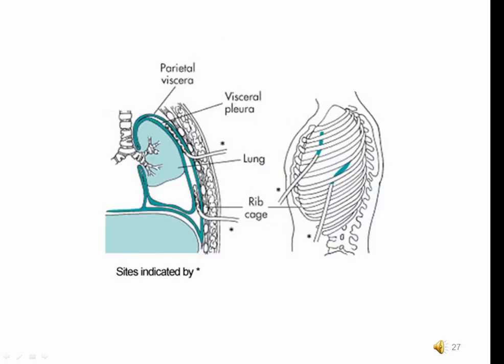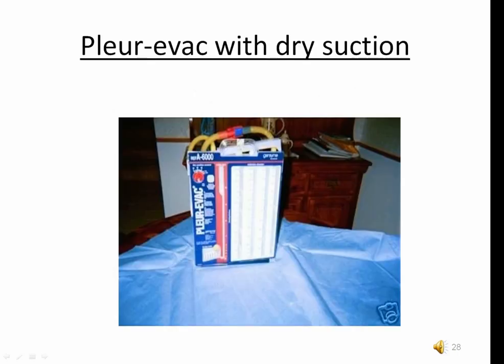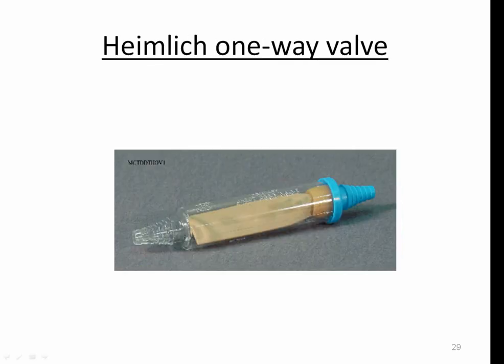When a patient has a pneumothorax, the catheter is inserted high up into the chest since air rises. If the patient has fluid or blood collecting, the catheter is placed towards the bottom of the rib cage since fluid goes to the bottom. Some patients have both air and fluid, so they will have two catheters attached together and connected to the drainage system. The newest type of underwater drainage systems use dry suction — you simply turn the dial to the desired suction amount. A Heimlich valve, also called a flutter valve, can drain air via a one-way valve but cannot drain fluid.